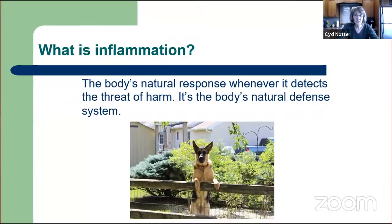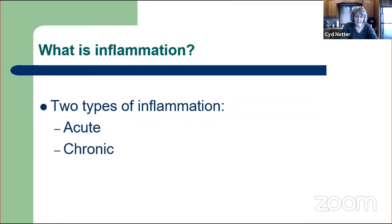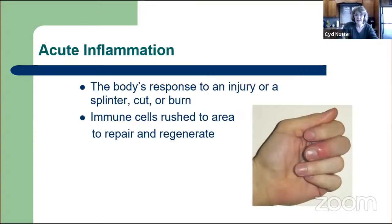So let's talk about what inflammation is. Inflammation is the body's natural response whenever it detects the threat of harm. So it's like the body's guard dog, or the body's natural defense system. And throughout most of human history, inflammation was thought to be a good thing. There are two types of inflammation: acute and chronic. Acute inflammation is the body's response to an injury like a splinter, a cut, or a burn.